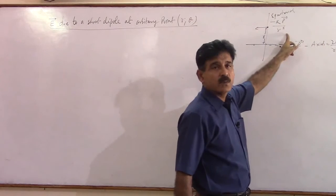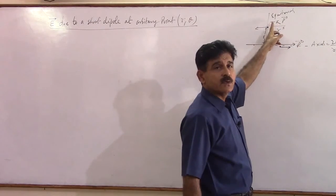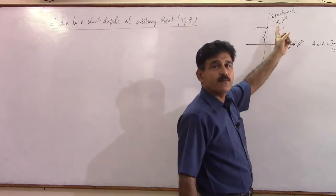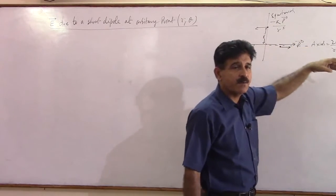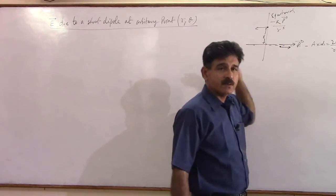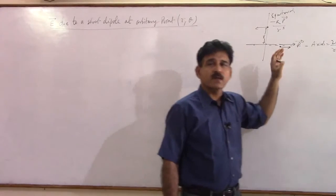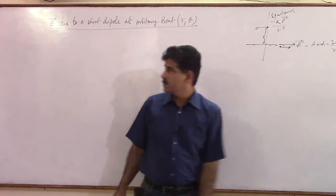You get minus KP by R cubed. What this minus tells you? That the field will be in the direction of minus P. So if this is P vector, minus P will be in this direction. These two standard results we have proved in last classes.